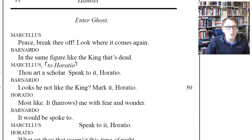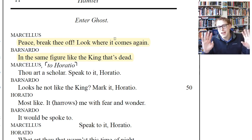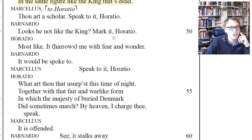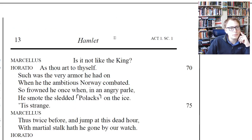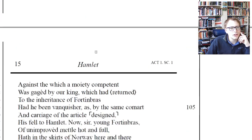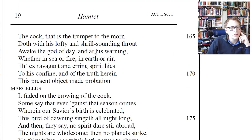'Enter the ghost. Marcellus: Peace, break thee off. Look where it comes again. And the same figure like the king that's dead.' So this is news — the king that's dead. The old king just died, which means there's a new king. That's an important part of the story we're going to get to. Act One, Scene One establishes this: characters seeing a ghost, and Horatio sees it too, which sets up what's to come at the end of Act One, Scene Two, where Horatio and Marcellus reveal what they've seen to Hamlet.